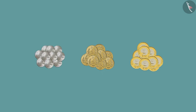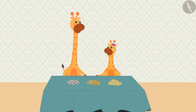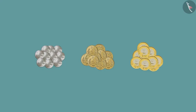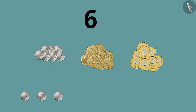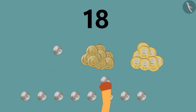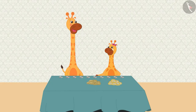First, we will count the 2-rupee coins. To count the 2-rupee coins, we will skip all the numbers by 2. Gaffee, you remember to skip count by 2, right? Yes mom. Gaffee starts to count: 2, 4, 6, 8, 10, 12, 14, 16, 18, and 20. Great job!